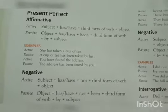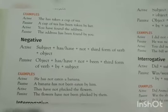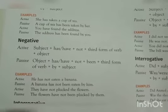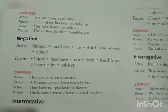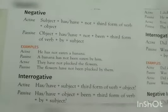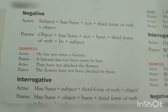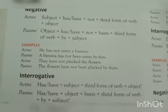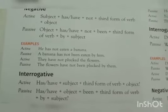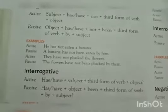For the negative aspect of present perfect, we simply add 'not' as in the previous sentences. For example: 'He has not eaten a banana' becomes 'A banana has not been eaten by him.' 'They have not plucked the flowers' becomes 'The flowers have not been plucked by them.'